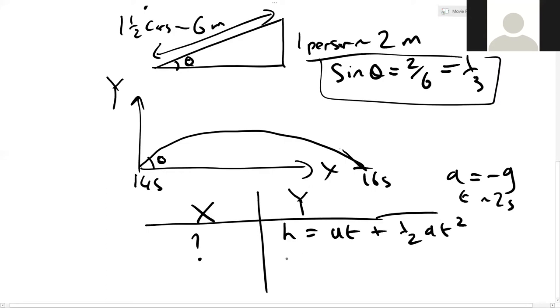So let's put that in. h we're saying is zero because it's landing at the same level as it left just about. Again, it's a bit of an approximation.